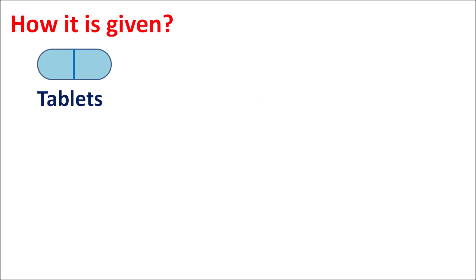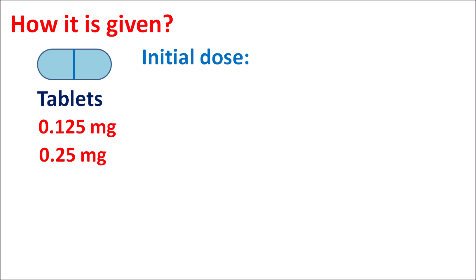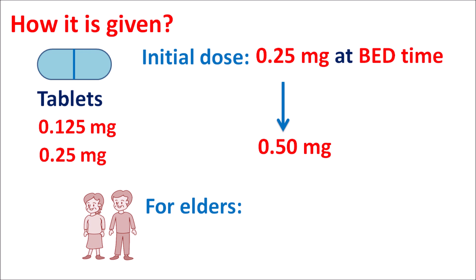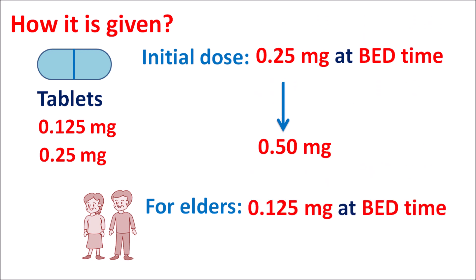Regarding dosage: this drug is available as tablets at strengths of 0.125 mg and 0.25 mg. The initial dose is 0.25 mg given at bedtime, which may be slowly increased up to 0.5 mg at bedtime. However, the lowest effective dose should be used to avoid sedation and drowsiness. In elderly patients, the dose should be reduced — trizolam is given at 0.125 mg at bedtime.